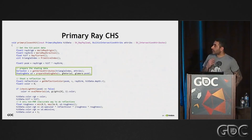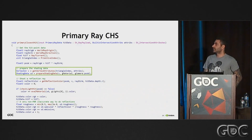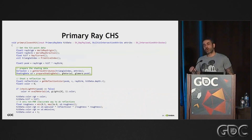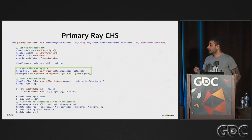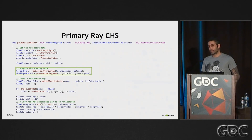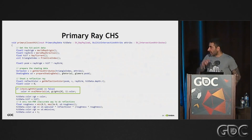I want to get to the part which is get vertex attributes and prepare shading data. This is the part that is going to invoke our material system. Basically, get vertex attributes is going to go in and fetch the current triangle data and current pixel data using the barycentric coordinates. And prepare shading data is going to go and fetch all the data we need from the textures and the current material.